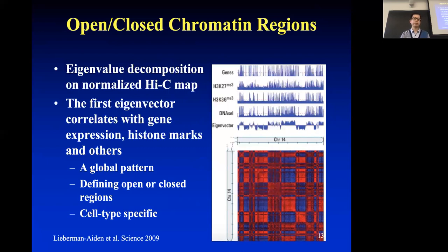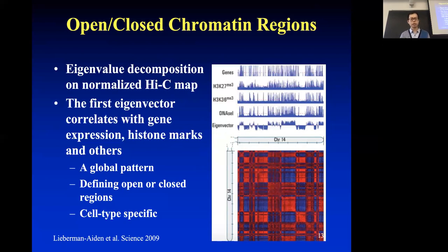After computing the eigenvector, you can see a one-to-one correspondence: if the eigenvalue is high, it corresponds to the red region; if it's low, it corresponds to the other region. Just by looking at this heat map, you can see that this open and closed compartment is a global pattern — we can only see it when we look at the heat map spanning the whole chromosome. When we zoom in, we cannot see it, but when we lower the resolution, we can see this pattern.